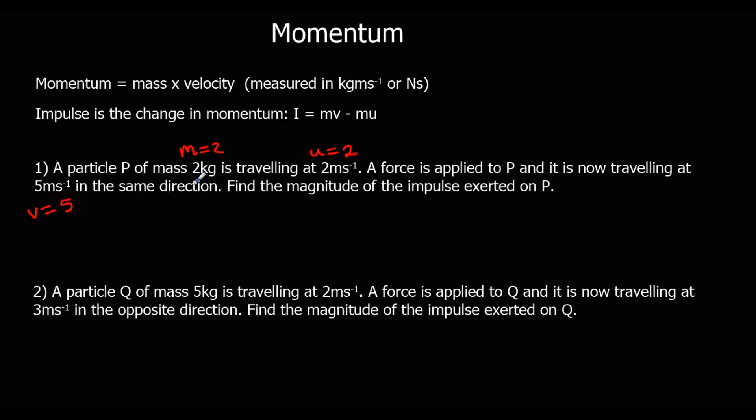That's important because if it was in a different direction, it would be negative 5. Find the magnitude. So where it says magnitude, if we get a negative answer, we're going to ignore it because we only care about the size of the number. We don't care about the direction. The modulus, we don't care whether it's positive or negative, we just want to know the number. Find the magnitude of the impulse exerted on P.